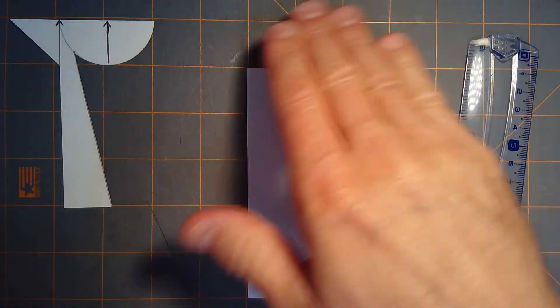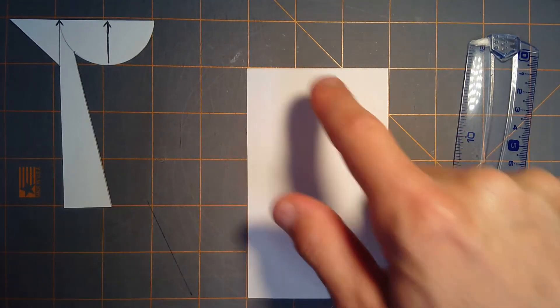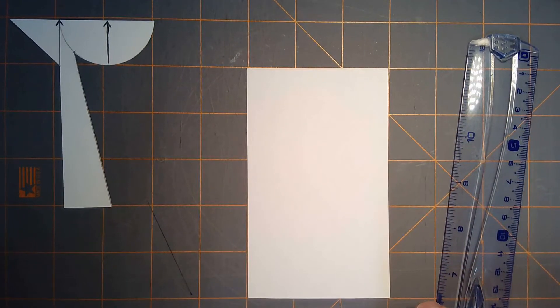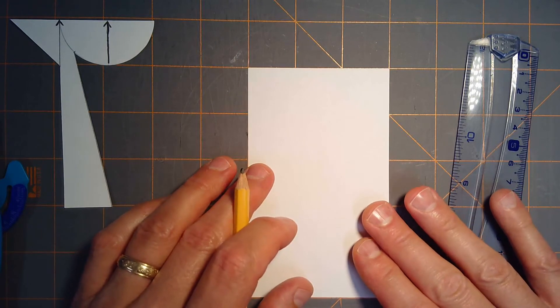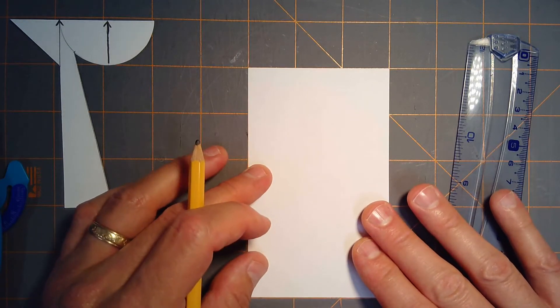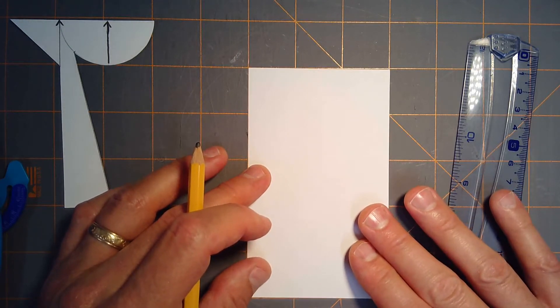I have this cutting mat which is really convenient. These are one-inch spacings on the grid. It's very convenient for jobs like this, but you can do this with just a ruler as well.